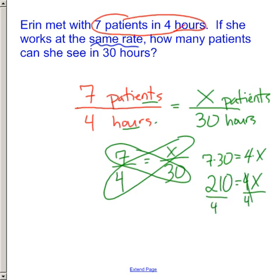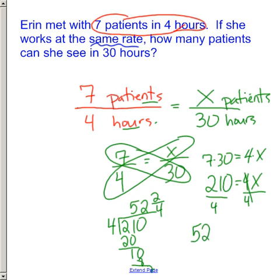So we can work that out with long division if you want to. 4 goes into 210 five times. That gives us 20. 4 goes into 10 twice. And we're going to end up with a remainder of 2. So this would be 52 and 2 fourths, but that reduces to 52 and a half equals x.